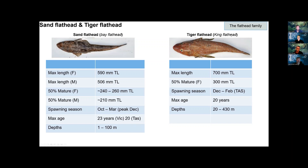Tiger flathead are sometimes called king flathead. A common misconception is that king flathead are just mature sand flathead — that's not right; it's a totally different species that evolved separately 20 million years ago. They are a larger species, reaching 700mm, maturing around 300mm, spawning December to February. Maximum age is similar — around 20 years — but they are generally found in deeper waters as well as inshore.